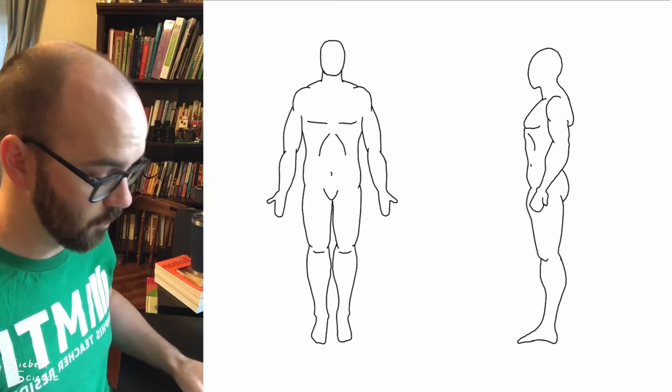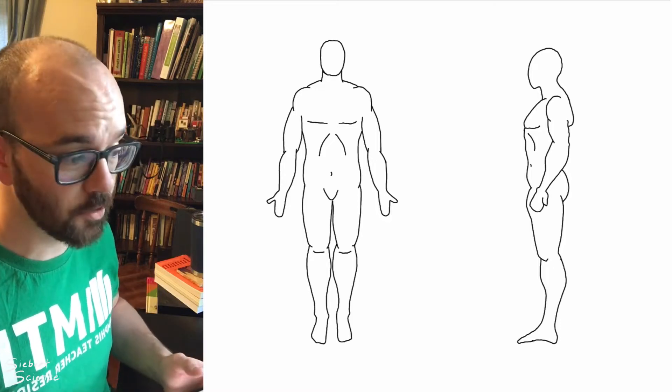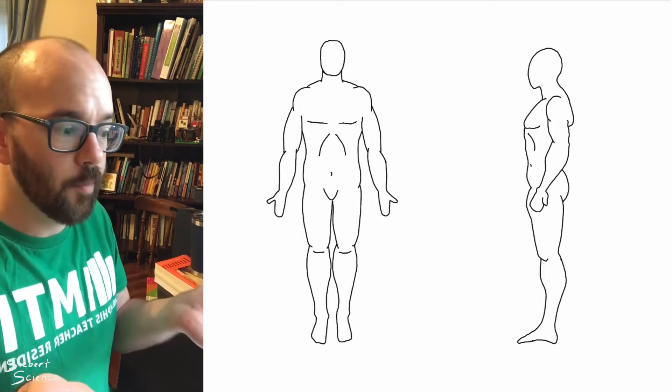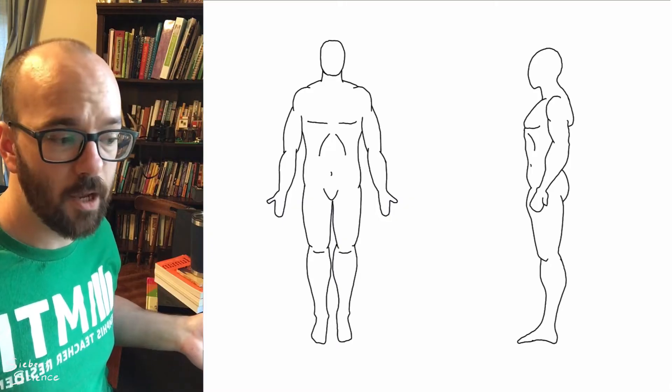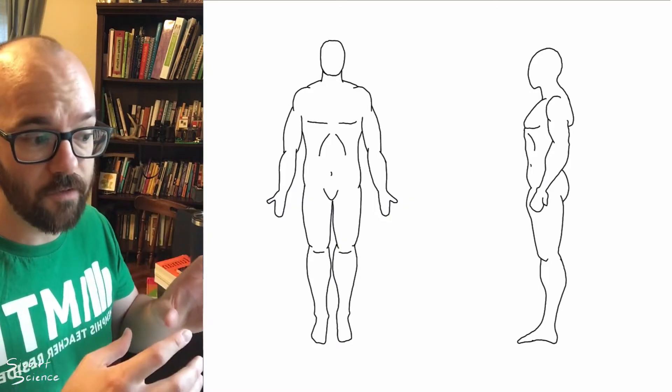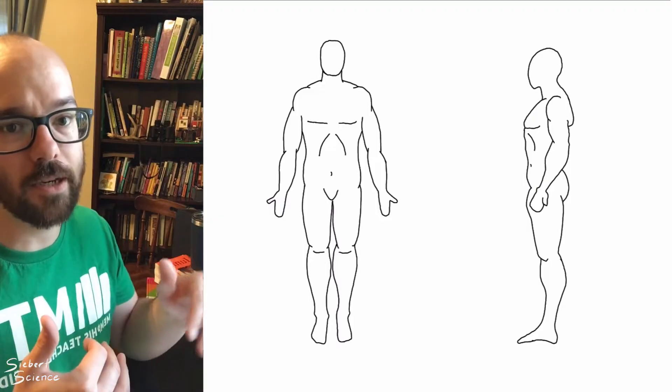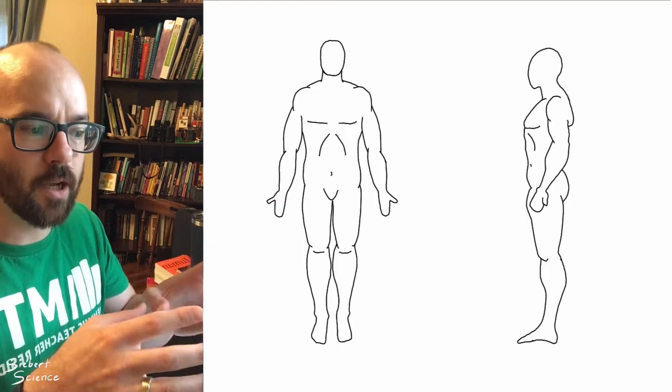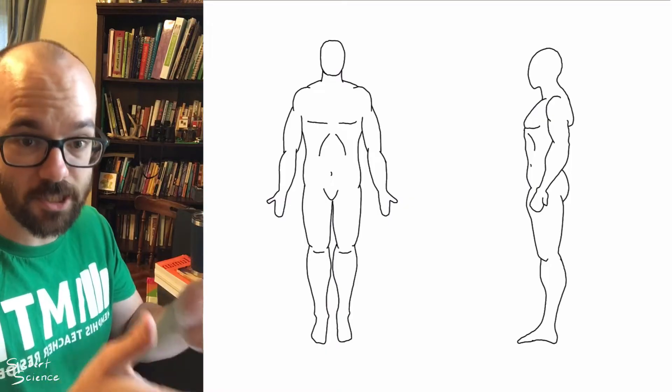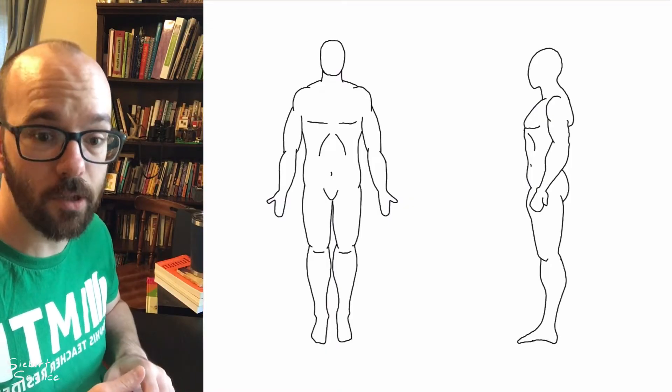So here we have a drawing of somebody standing in what we call anatomical position. They're standing upright with their palms forward and their arms to their side. We're going to describe locations of things as if somebody were standing in anatomical position. So even if somebody's lying down, we still describe the location of structures based on where they would be located with the person standing up in anatomical position like this.